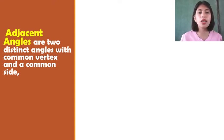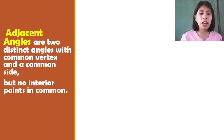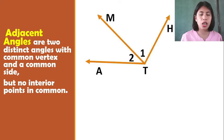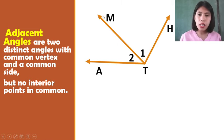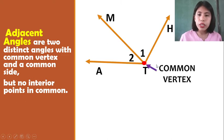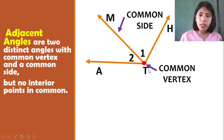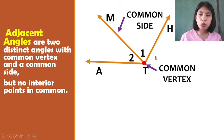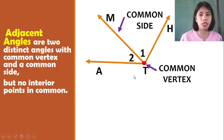Next is Adjacent Angles. Adjacent angles are two distinct angles with a common vertex and a common side but no interior points in common. So we have this figure, we have angle 2 and angle 1, or angle A-T-M and angle M-T-H. These two angles share a common vertex, and the common side is ray T-M, but no interior points in common — measure angle 1 and measure angle 2 do not intersect. Therefore, angle 1 and angle 2 are adjacent angles.